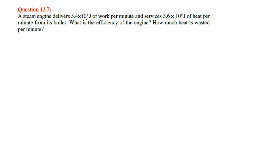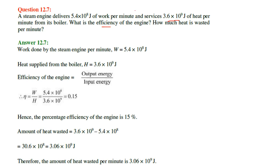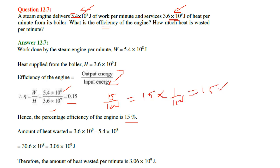A steam engine delivers a certain amount of joules of work per minute and services a certain amount of joules of heat per minute from its boiler. What is the efficiency of the engine and how much heat is wasted per minute? Work done by the steam engine per minute is given; heat supplied by the boiler is also given. Efficiency eta equals W by H, which is 5.4 by 3.6 (with proper powers), giving 0.15. So the efficiency is 15%. The amount of heat wasted is the heat supplied minus work done, giving 3.06 into 10 to the power 9 joules per minute.